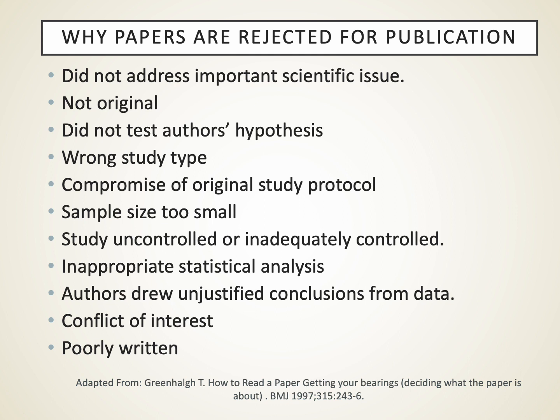There was a great series of articles in the late 1990s by Greenhall, published in the British Medical Journal about how to read medical journals, and much of this has not really changed over the last 30 years. Why papers have been rejected for publication is that the study didn't address an important scientific issue, it wasn't original data, the authors had a hypothesis but what they tested didn't represent that hypothesis, the study design was wrong, there was bias, the sample size was small, or there weren't adequate controls.